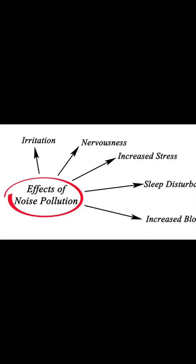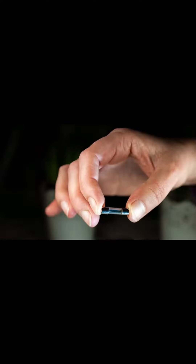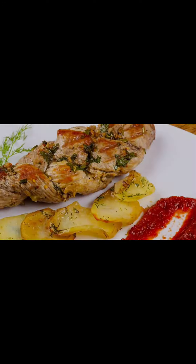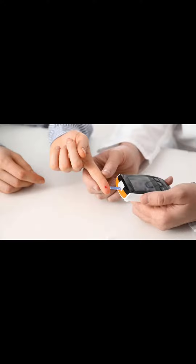Insulin resistance is common in type 2 diabetes and is managed by lifestyle changes and medications. Advances in insulin therapy include insulin analogs — modified insulins with altered absorption rates and duration of action. Smart insulin is still in development, designed to activate only when blood sugar levels are high. Gene therapy is a potential future treatment for type 1 diabetes.